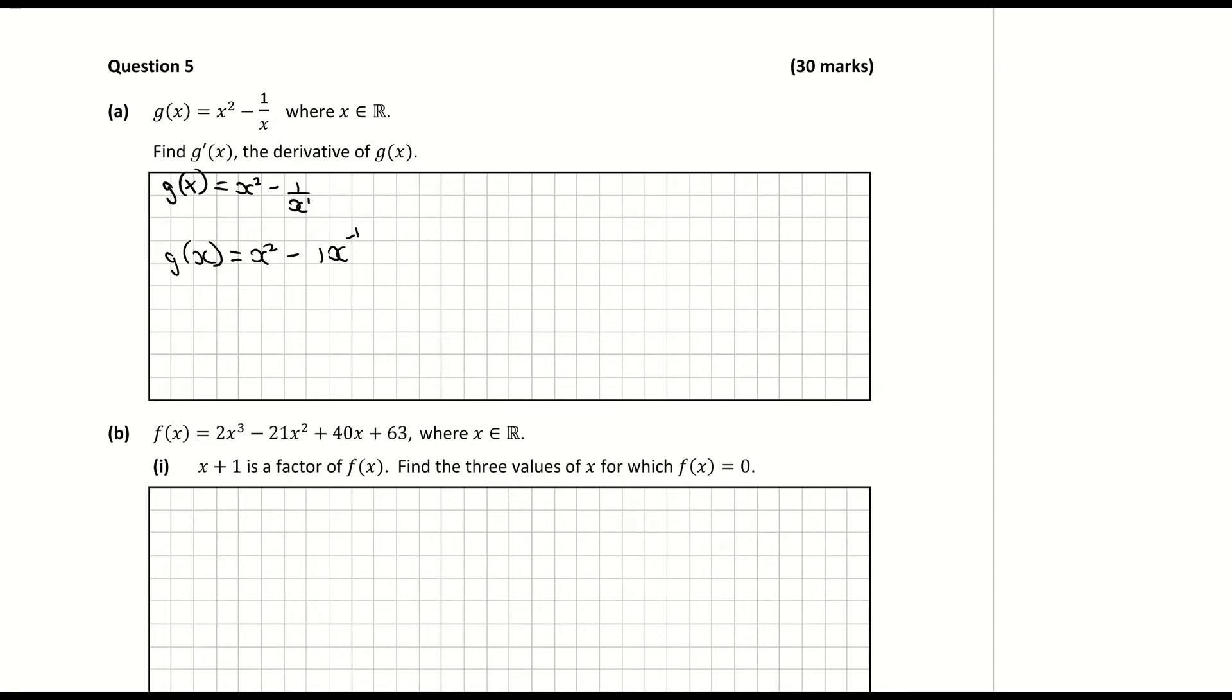So now I'm going to differentiate it and to differentiate it I bring down the power, multiply it by the coefficient of the x and reduce the power. So that becomes 2x to the power of 1 and bringing down the power here and multiplying it. So I'm multiplying minus 1 by negative 1 so that will become a plus 1x, reduce the power, becomes x to the minus 2. And then put it back together so that's giving me 2x plus 1 over x squared.